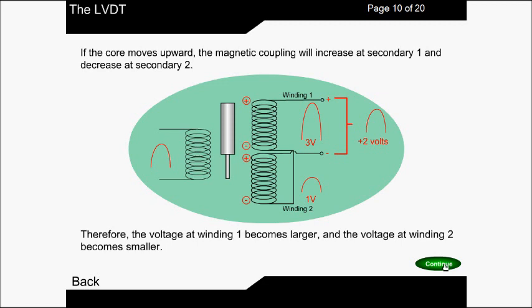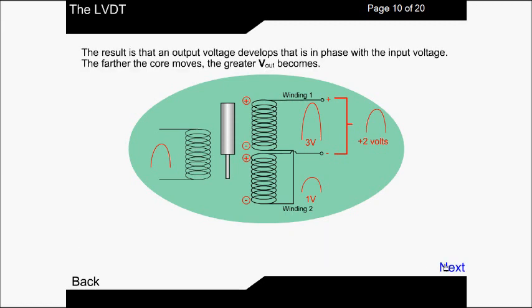In this condition it has two volts. Suppose the upper winding has three volts and the lower winding has one volt. The net voltage will be two, that is positive two.